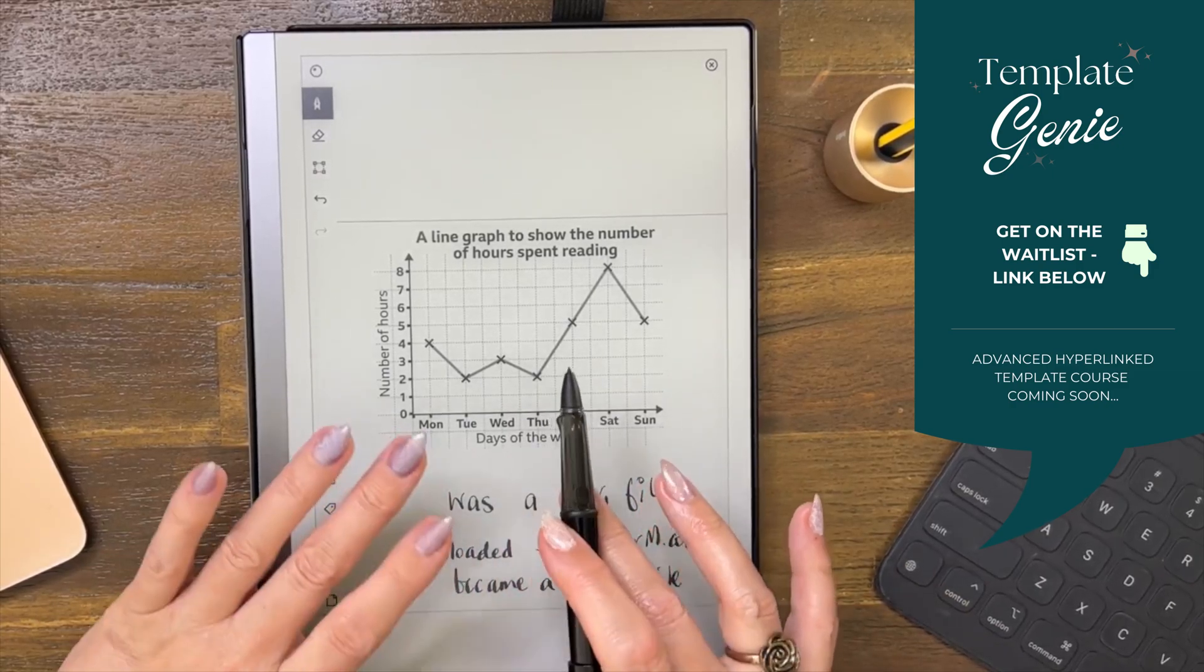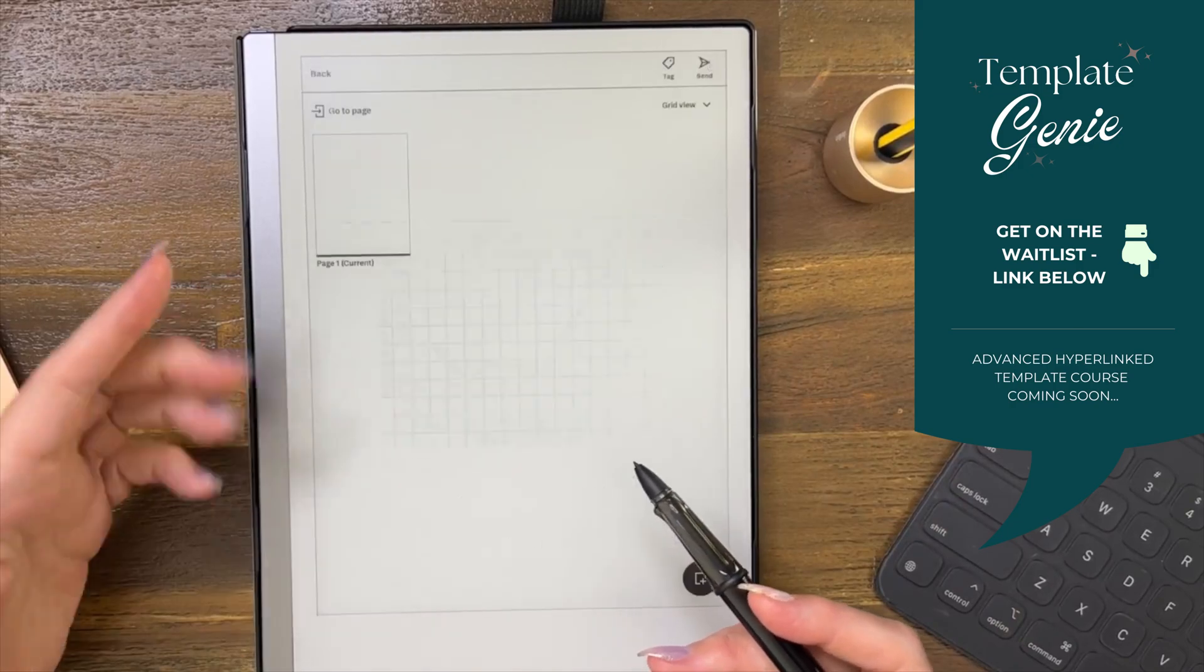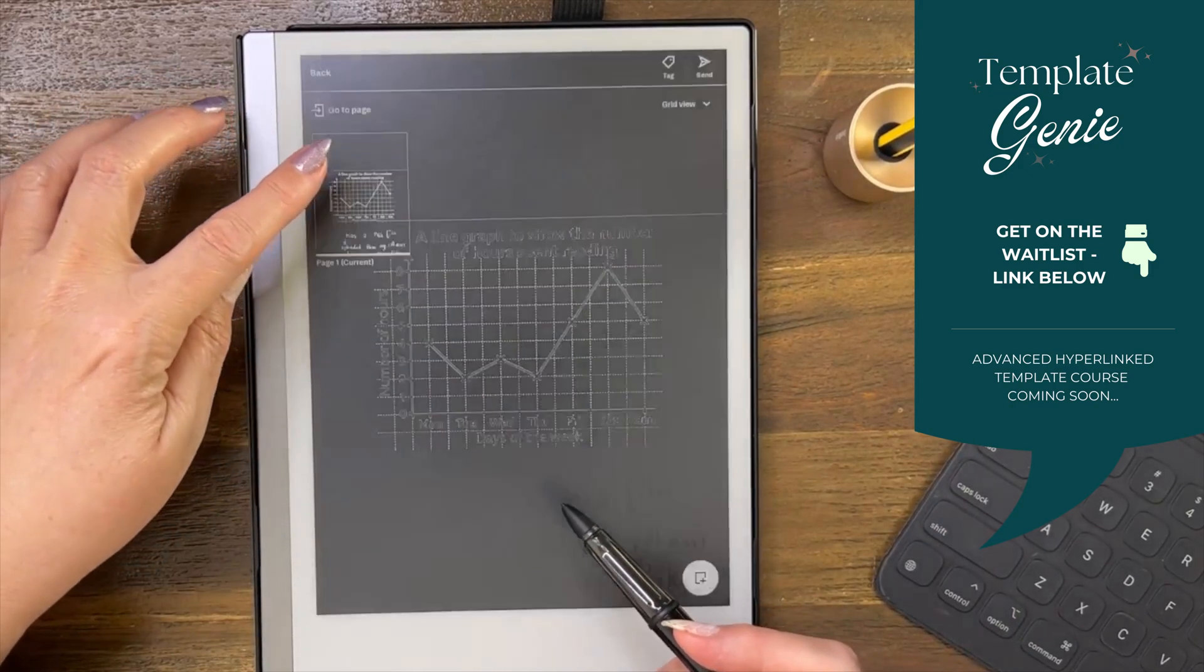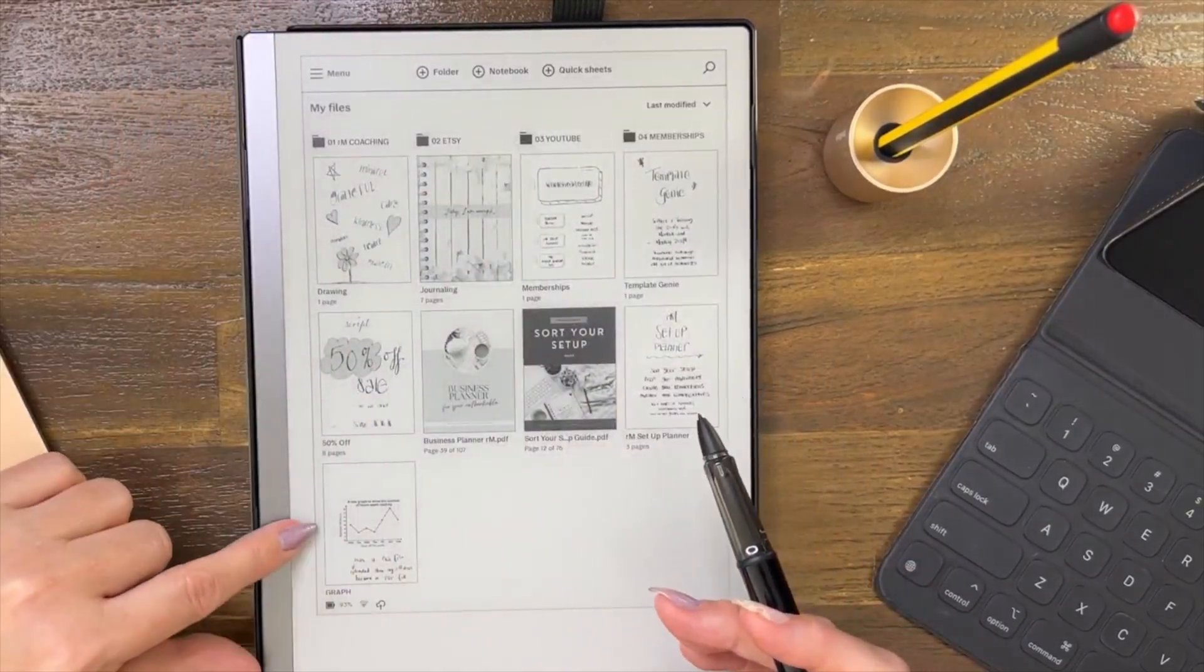The only way you can use this—well, I mean, it's here for you to use. There's only one page in this document and it's on the Remarkable. So if I come out, it's here on the Remarkable.